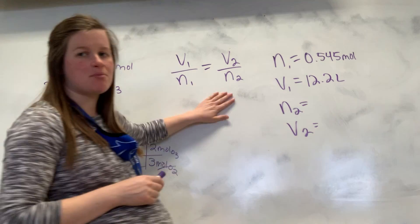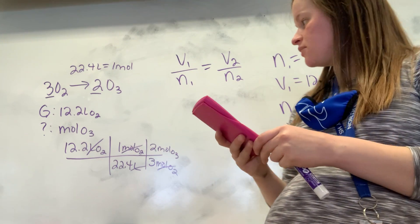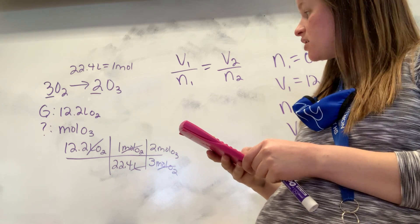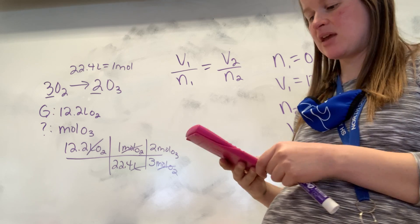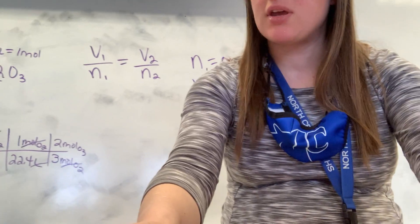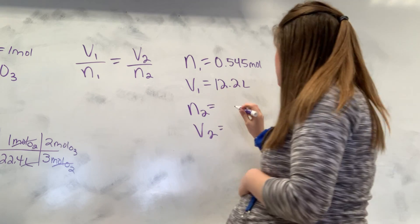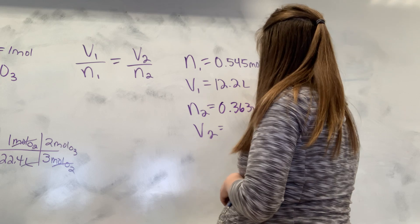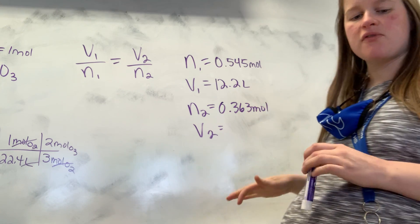And then I come over here and plug in. So my moles of N2, if I take 12.2 divided by 22.4, and then I multiply by 2, and I divide by 3, I get my moles over here to be 0.363 moles. So I first had to use stoichiometry to solve for all this stuff. But now that I have, I can plug in and solve.